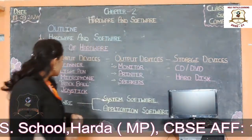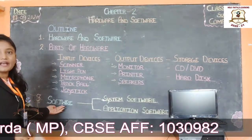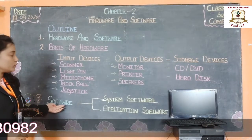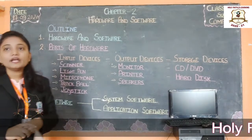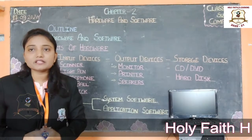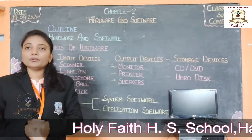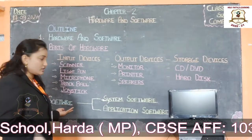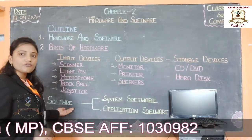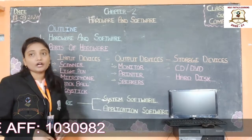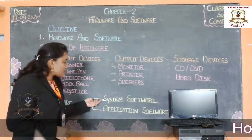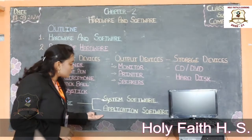Software is that part of a computer which we cannot see and touch. There are two types of software: system software and application software.